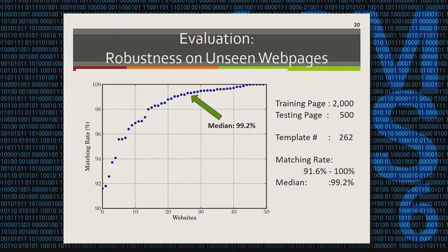Now let's look at some evaluation results. First, we want to see if the template mechanism is effective. We did this experiment on Alexa's top 50 websites. For each website, we crawled 2,500 webpages, used 2,000 as a training set to build templates, and then used the templates to match scripts extracted from the remaining 500 webpages. The matching rate ranges from 91.6% to 100% with a median value of 99.2%, showing that the template mechanism is effective.